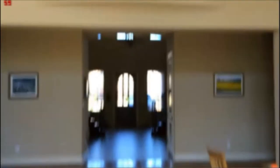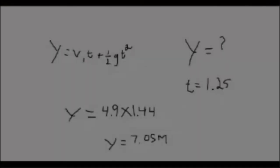This is an example of free fall because there is no initial velocity. Here we are trying to find y, or the height from which the ball was dropped, using the equation y equals one-half g times t squared. The time is 1.2 seconds. We square that to get 1.44, then multiply by 4.9, which is half of gravity. The answer is 7.05 meters.